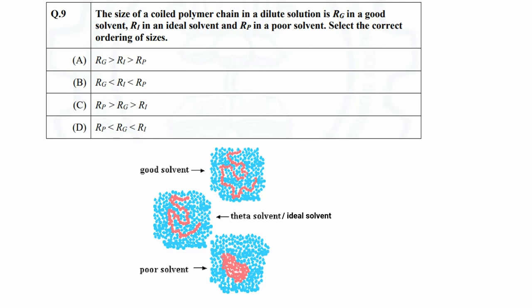In case of good solvent, polymer chains will have positive interaction with the solvent molecules. So the solvent molecules can penetrate inside the polymer coil and push it to expand a bit. Depending upon the extent of interaction, polymer chains can even form an extended structure. However, in any case, the size of polymer coil will be larger than in ideal solvent.